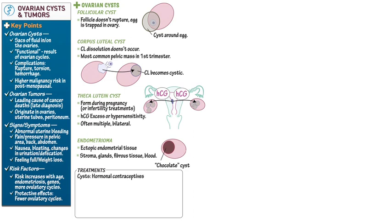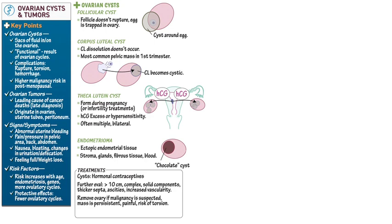To treat and prevent ovarian cysts, we can use hormonal contraceptives, which block ovulation. However, cysts with the following characteristics warrant further evaluation: greater than 10 centimeters in diameter, complex architecture with solid components, thicker septa, ascites, and increased vascularity. Removal of the ovaries is recommended if malignancy is suspected, or if the mass is persistent, painful, or if there is risk of torsion, which can lead to ischemia and ovarian necrosis.